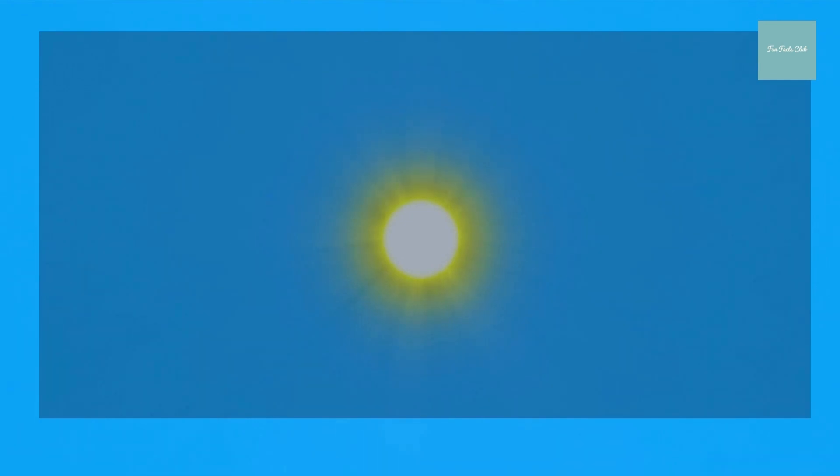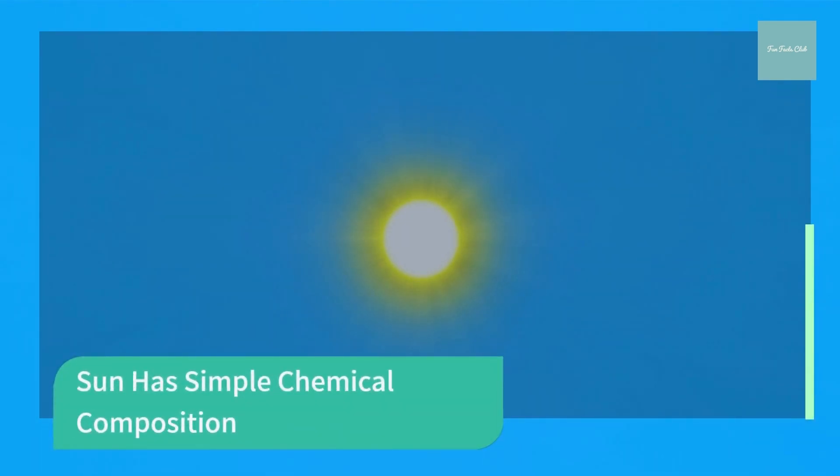The Sun consists of only a few elements, of which hydrogen is predominant at around 72 percent and helium at about 26 percent, with the other elements accounting for progressively smaller amounts, such as oxygen, carbon, neon, nitrogen, magnesium, iron, and silicon.